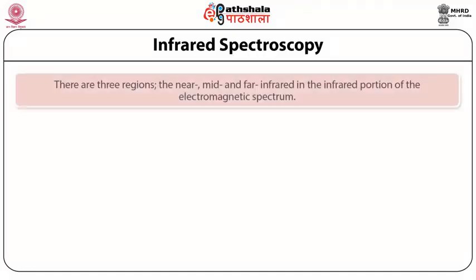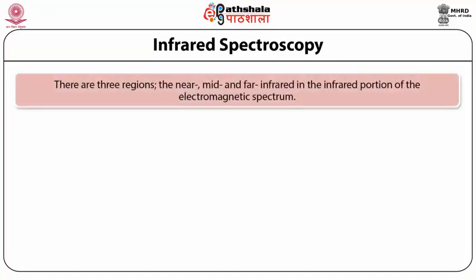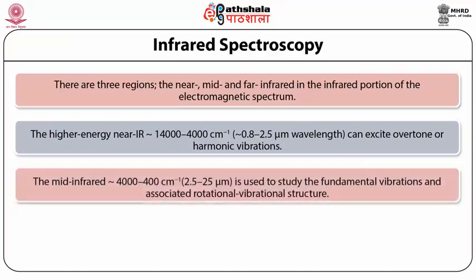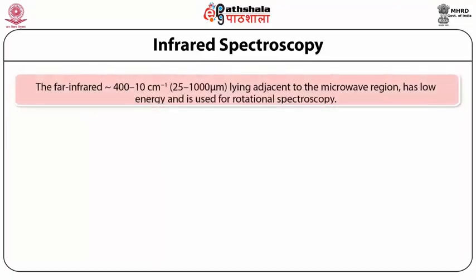Infrared spectroscopy. There are three regions in the infrared portion of the electromagnetic spectrum: near, mid, and far infrared. The higher-energy near IR (14,000–4,000 cm⁻¹, corresponding to 0.8–2.5 μm wavelength) can excite overtone or harmonic vibrations. The mid infrared (4,000–400 cm⁻¹, 2.5–25 μm) is used to study fundamental vibrations and associated rotational-vibrational structure. The far infrared (400–10 cm⁻¹, 25–1000 μm), lying adjacent to the microwave region, has low energy and is used for rotational spectroscopy.